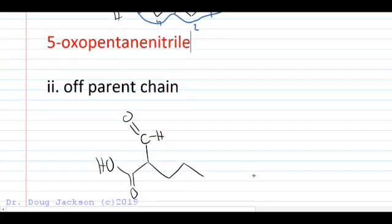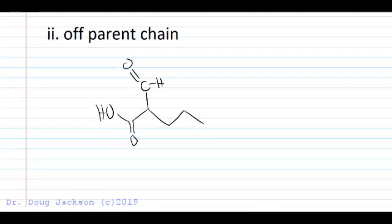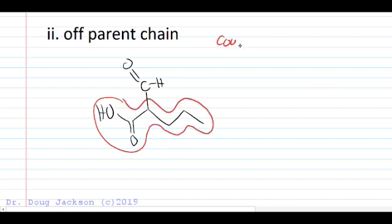If the aldehyde is not on the parent chain, the longest carbon to carbon chain containing the highest priority group here, our carboxylic acid is greater than our aldehyde. Just like in the previous example, our nitrile was greater than the aldehyde. We would get the longest carbon to carbon chain that has that highest priority group. So we put a one, a two, a three, a four, and a five. And now, because we're off the parent chain, that carbon needs to be named formyl.